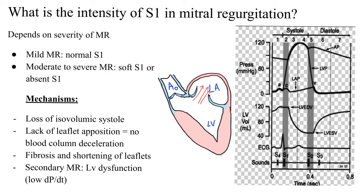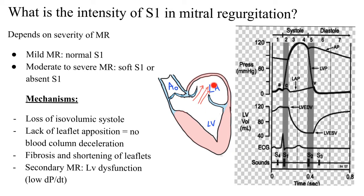However, a change of volume occurs in mitral regurgitation because at the beginning of systole, blood is rushing from the left ventricle to the left atrium — that is, there is a leakage of the mitral valve. As a result, even though the LV is contracting, there is a change in the volume of the LV, and the volume is decreasing as most of the blood is going into the LA.